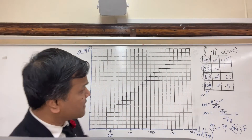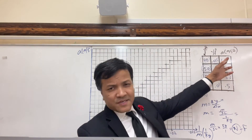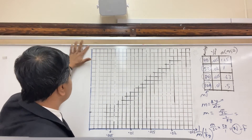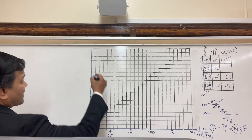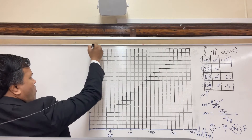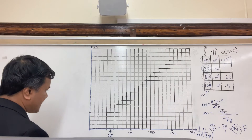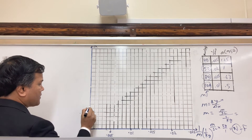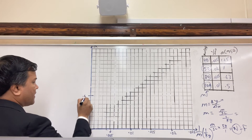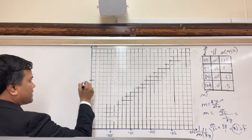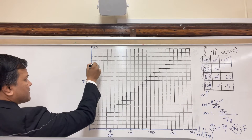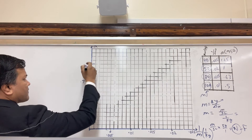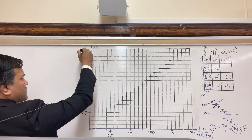Now let's take care of the y-axis. Our biggest y is 1.25, so this one should be 1.25. Let's increment by four boxes: 0.25, 0.5, 0.75, then 1.25.